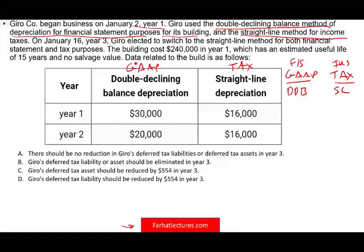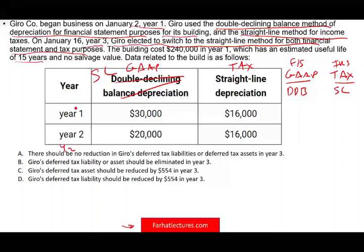On January 16th, year three, something happened: Gyro elected to switch to the straight line method for both financial and tax purposes. So in year three, they switch both to straight line. The building cost is $240,000 in year one, which has an estimated useful life of 15 years and no salvage value. Data related to the building is as follows — they're giving us the depreciation data.